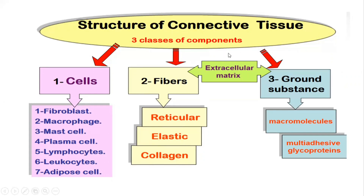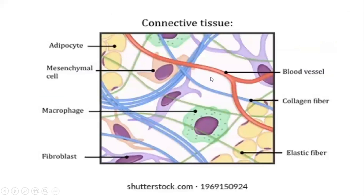The ground substance is a gel-like structure located in the connective tissue. The ground substance and the fibers together make up the extracellular matrix. Here is an illustration of connective tissue. These blue ones are collagen fibers, these green ones are elastic fibers. You can see different cells — this is a mesenchymal cell, this is an adipocyte or fat cell, and we have fibroblasts and blood vessels. This white jelly-like substance in between is what we call the ground substance, and the ground substance plus the fibers make the extracellular matrix.